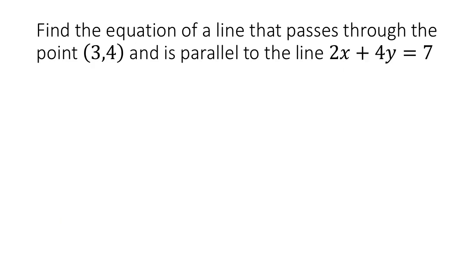Let's do another example. In this question, we are once again given a point, (3, 4), and we're asked to find a line that goes through that point and is parallel to this line, 2x plus 4y equals 7. In cases like this, it's important to make a distinction between the information about the line that we're given and the information about the line that we want.